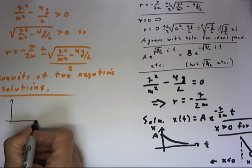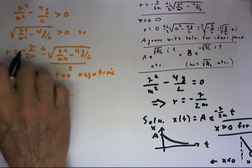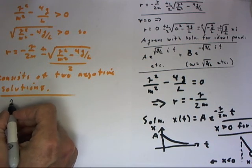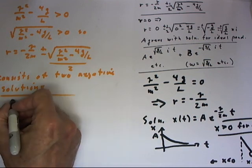Now, one of them, the one that we get if we use the minus, is going to have a more negative value. So one of these solutions is going to approach zero more rapidly than the other.